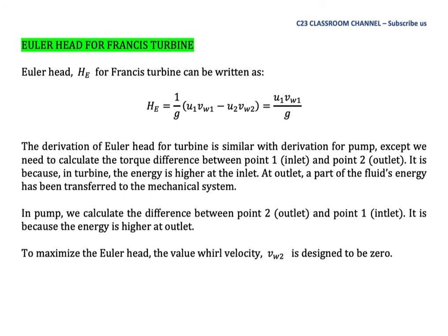To maximize the Euler head, the value of whirl velocity Vw2 is designed to be zero.